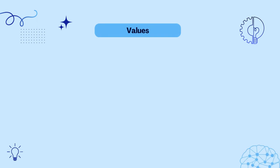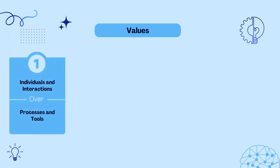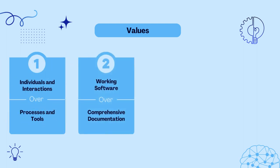Agile believes people are the most important part of development and should be valued above processes and tools. Agile recognizes it's better to release a minimum viable product than taking much longer to release something that is perfect.